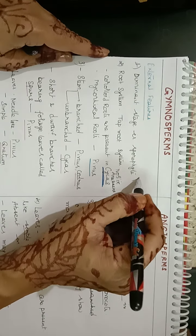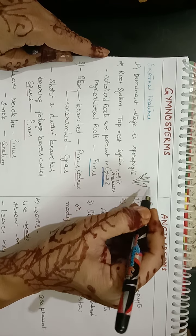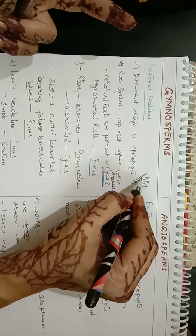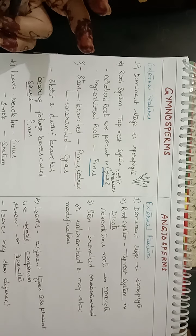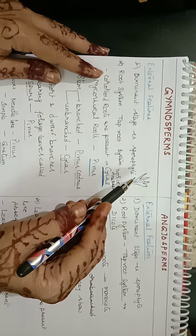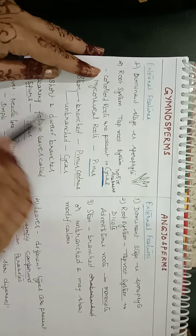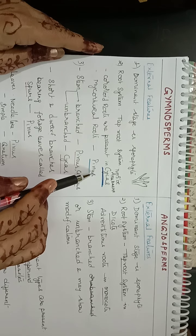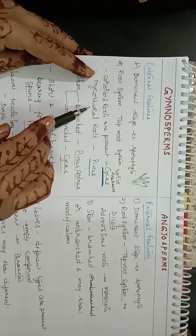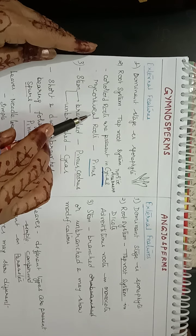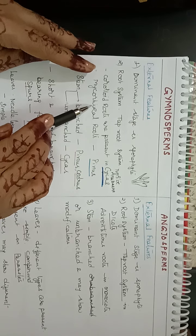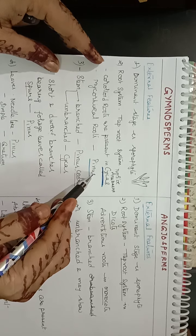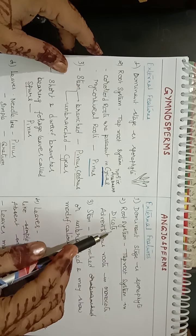Coraloid means the tip of the root divides into two — called dichotomous branching. Mycorrhizal roots are another modification found in Pinus. Mycorrhiza is a symbiotic association with fungi that helps in phosphate absorption from the soil. In angiosperms, tap root system is found in dicots and adventitious roots in monocots.